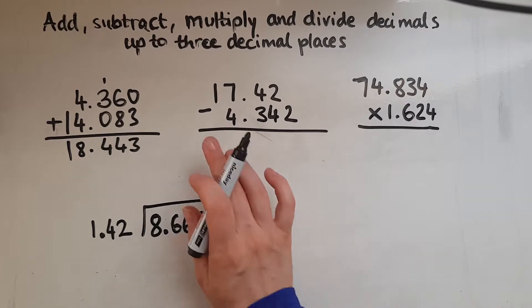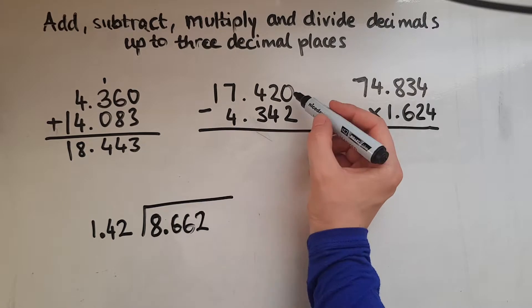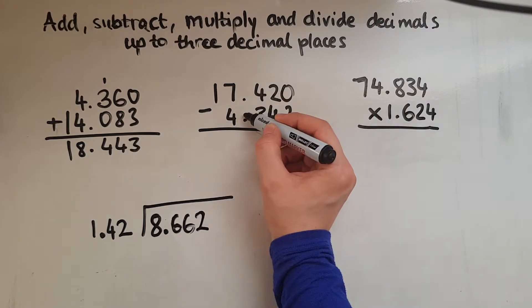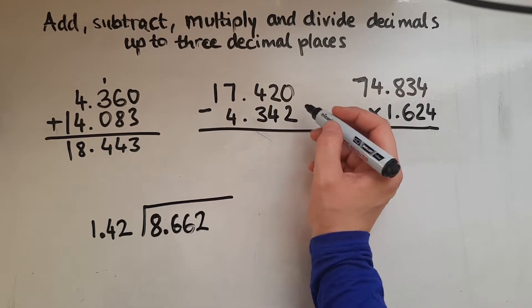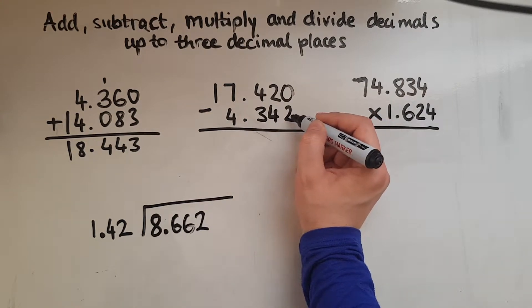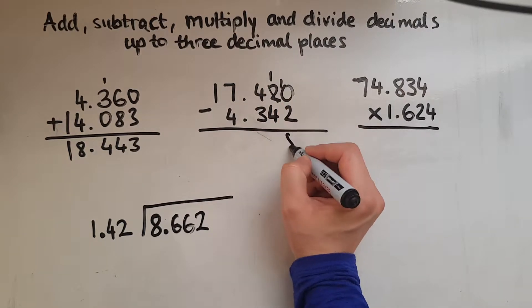Then looking at subtraction, again no digit here so we'll add a 0. Lined up so we've got decimal points under the decimal points, units under the units and so on. So 0 take away 2 gives us a negative so we'll borrow 1 from this so this becomes 1 and this becomes 10. 10 take away 2 gives us 8.